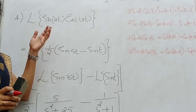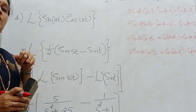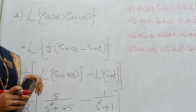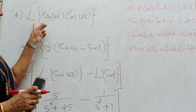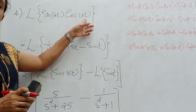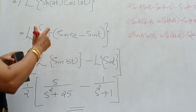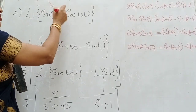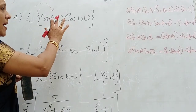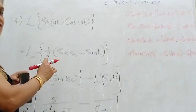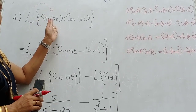While checking university answer papers, I had seen that many students wrote wrong answers for this question. L of sine 2t into cos 3t — we cannot express this as L of sine 2t into L of cos 3t. You don't write this as a product of the Laplace transforms. We don't have that result.